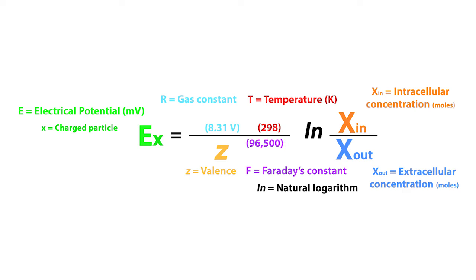Now, if we solve for RT over F, we get 0.02567 volts, or 25.7 millivolts, at 25 degrees Celsius, or 298 Kelvin.